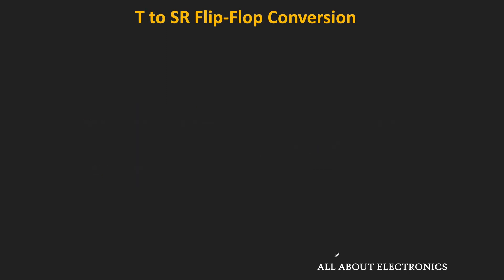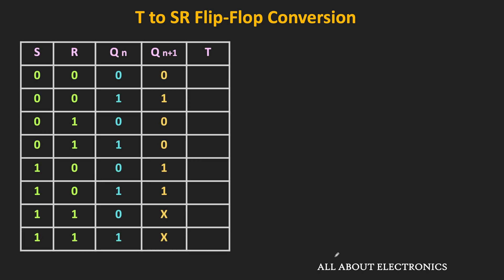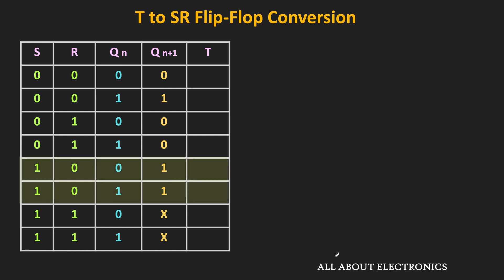Since the SR flip-flop is our required flip-flop, let us first write down its truth table. For the SR flip-flop, when both inputs are 0, the flip-flop will retain its current state. When S is 0 and R is 1, the flip-flop will get reset to 0. When S is 1 and R is 0, the output will become 1. And when both inputs are 1, the output is indeterminate.